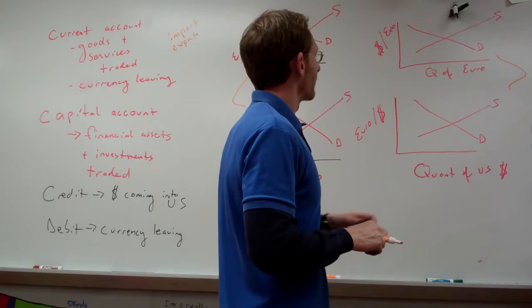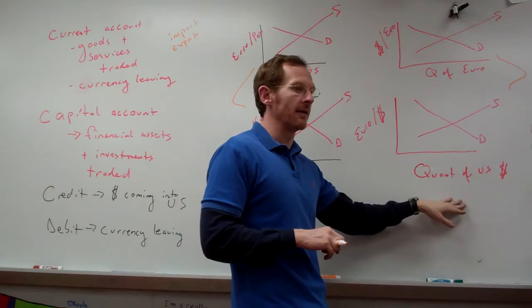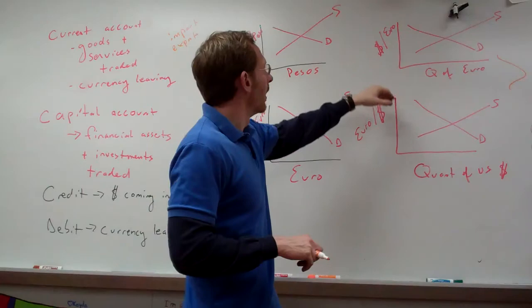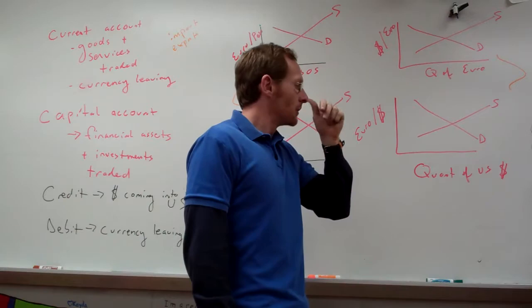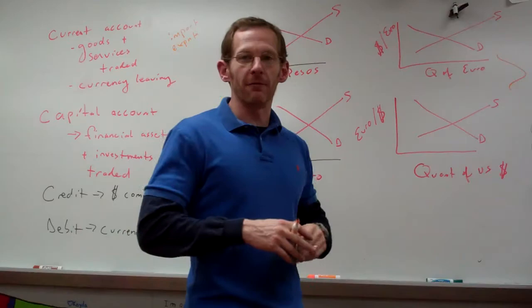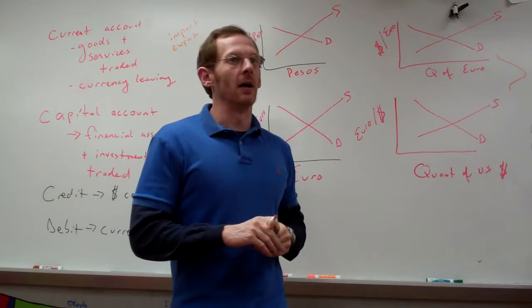Now, our foreign exchange graph looks like this. We're comparing euros and US dollars. On the first graph, the x-axis has quantity of US dollars and the y-axis has euros per dollar. On the second graph, we have quantity of euros and US dollars per euro. If French people come to America to buy our goods — say they come as tourists — they're going to want to spend American dollars.